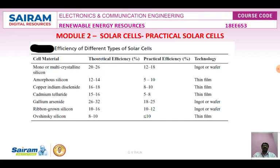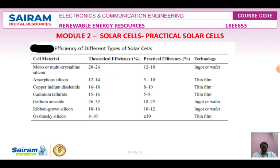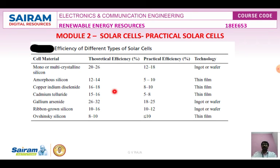Next we are going to see practical solar cells. Solar cells are now manufactured from a number of different semiconductors. The various cell materials include monocrystalline, multi-crystalline, amorphous silicon, copper indium diselenide, cadmium telluride, gallium arsenide, ribbon/sheet silicon, and other types. Comparing different types: multi-crystalline silicon gives 26% theoretically but 18% practically; thin film technologies like copper cadmium telluride and gallium arsenide give 26–32% theoretically and 18–25% practically; ribbon/sheet silicon gives 10–16%.